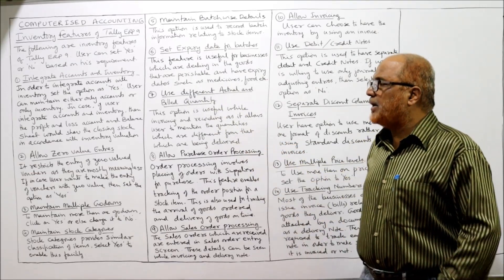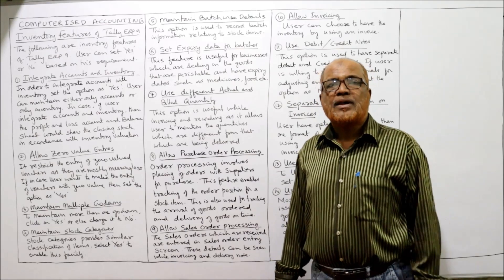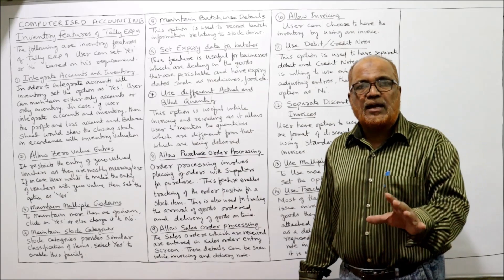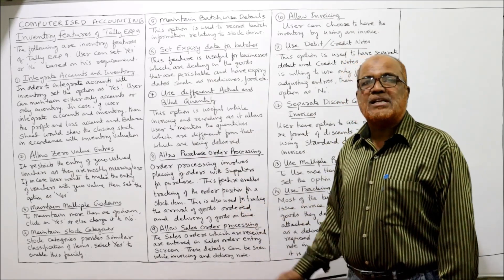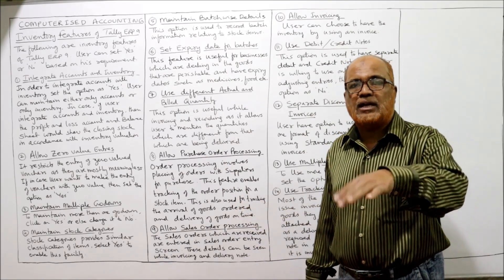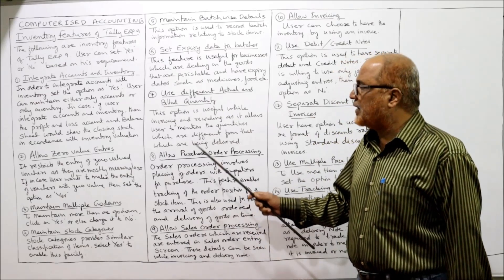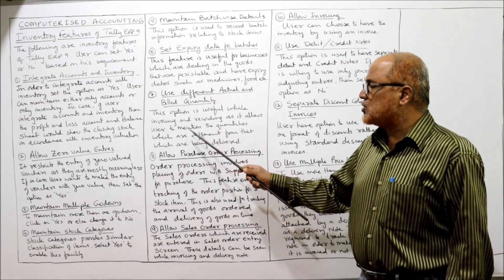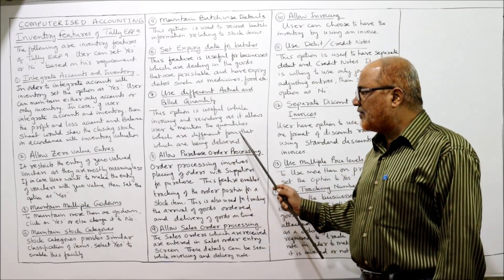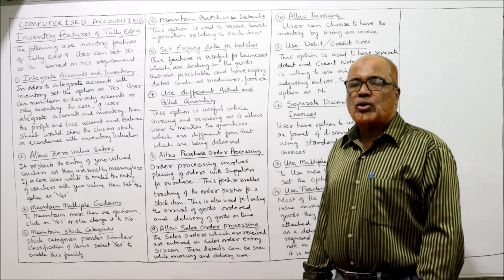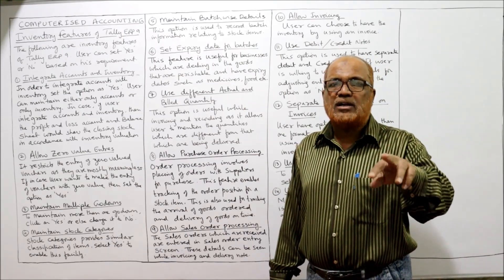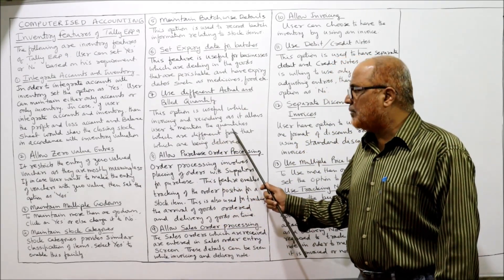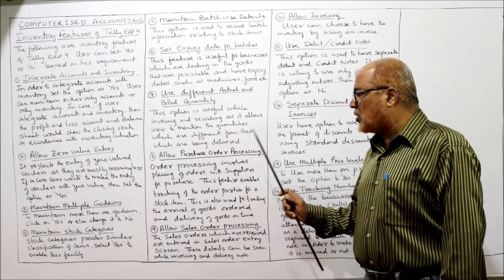The seventh feature is: use different actual and billed quantity. Sometimes the actual quantity and the billed quantity may differ. In that case, enable this facility. This option is useful while invoicing and recording, as it allows the user to mention quantities different from those being delivered — the delivered and invoiced quantities can be different.